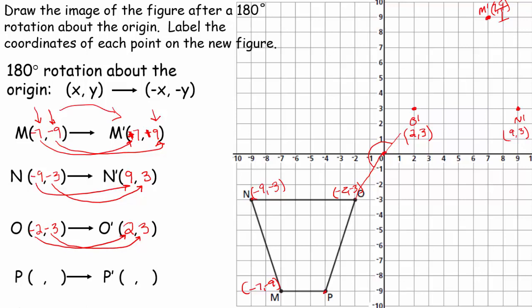Let's look at our last coordinate, which is P. That is at negative 4, negative 9. We're going to write that in: negative 4, negative 9. Our rule states that I'm going to change the x-coordinate and the y-coordinate as well. So negative 4 becomes positive 4, and negative 9 becomes positive 9. You can also think to yourself: they both have to be positive if I'm going to end up in quadrant 1 — and if they're not, I did something wrong. So let's go ahead and graph P prime at 4, 9. And that is P prime at 4, 9. Now we're going to go ahead and connect those points.